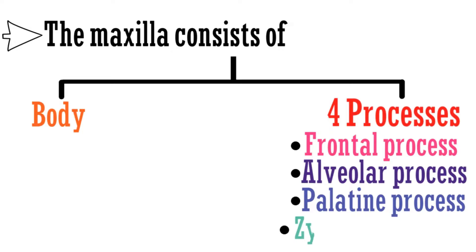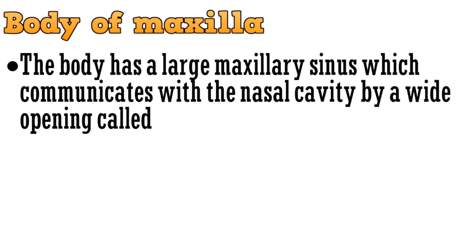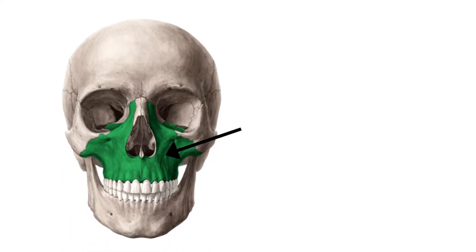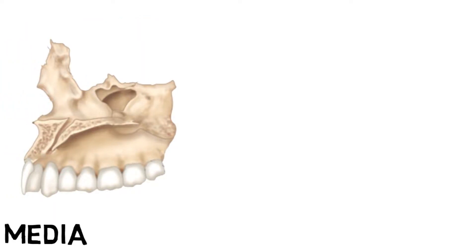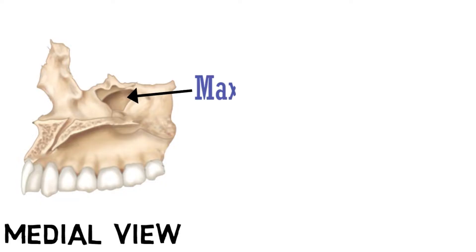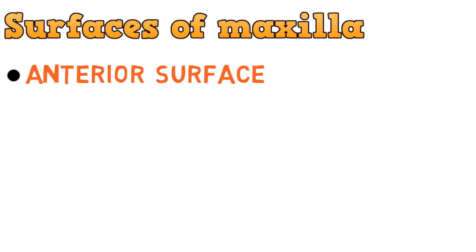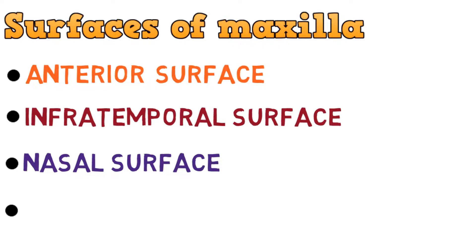We will discuss each of these parts separately. Starting with the body of maxilla, the body has a large maxillary sinus which communicates with the nasal cavity by a wide opening called the maxillary hiatus. The body of maxilla has four surfaces: anterior surface, infratemporal or posterior surface, nasal or medial surface, and orbital or superior surface.